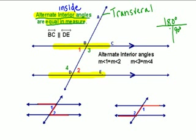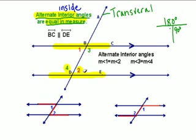So the rule states that alternate interior angles are equal in measure. Angle 1 and angle 2 are equal, and angle 4 and angle 3 are equal. You can figure out all the angle measures if you are given just one particular measurement.